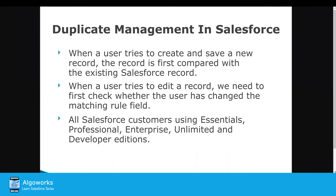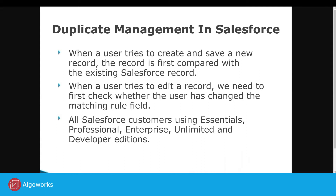When a user tries to create and save a record, it is first compared with existing Salesforce records for duplicates. Secondly, when a user tries to edit a record, it is checked whether the user has changed the value of the matching rule field.